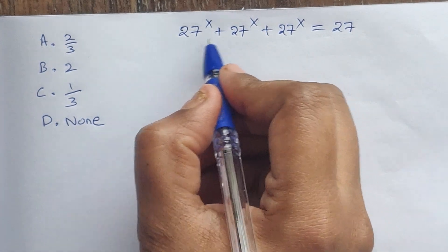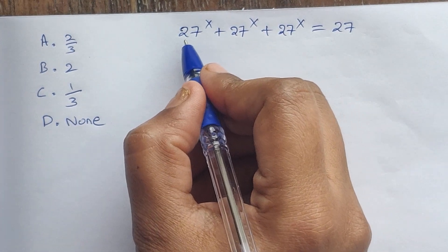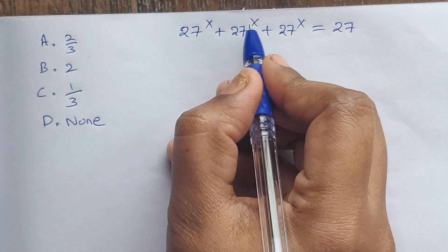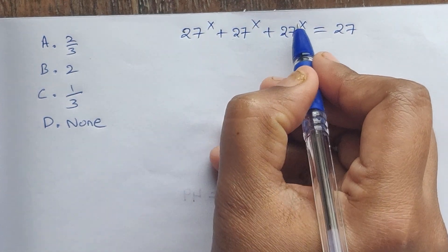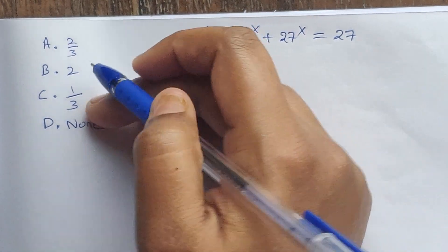Hello everyone, welcome back to my channel. Here we have one problem: 27^x + 27^x + 27^x = 27. Here we have 4 options.